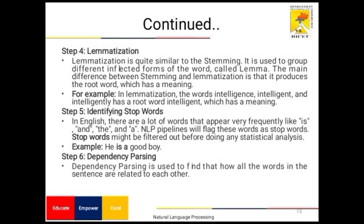Step five is identifying stop words. In English, there are many words that appear very frequently, like 'that,' 'is,' 'and,' and 'the,' and the NLP pipeline will flag these as stop words. Stop words might be filtered out before doing any statistical analysis. For example, in 'he's a good boy,' we have to identify and split out the stop words. Step six is dependency parsing, which is used to find how all the words in a sentence are related to each other.